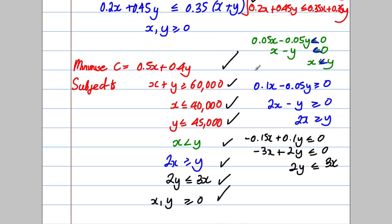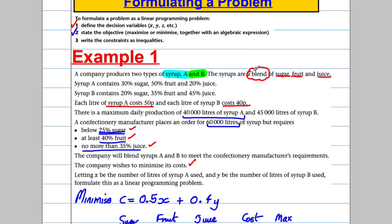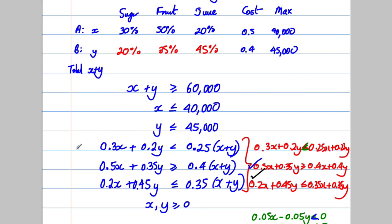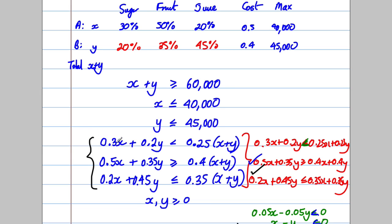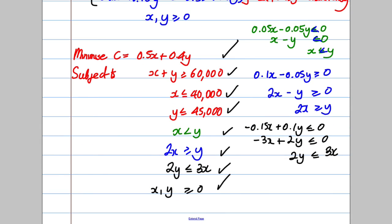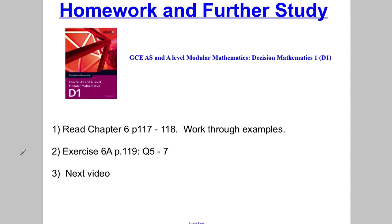Hopefully that was clear. When you see the word 'blending', you need to think about constraints where amounts depend on being less than a percentage of the total - something like: 30% of syrup A plus 20% of syrup B must be less than 25% of the total amount. To practice, try questions five to seven. Thanks for watching.